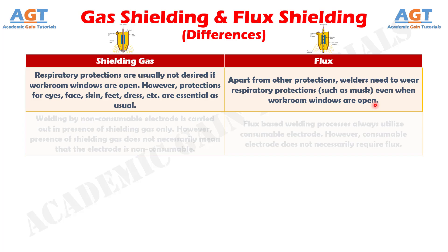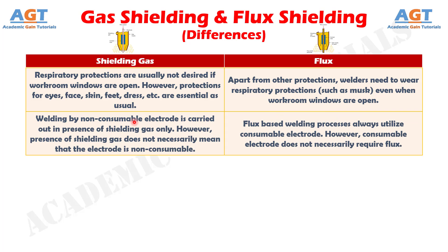Number 7: Welding by non-consumable electrode is carried out in the presence of shielding gas only. However, presence of shielding gas does not necessarily mean that the electrode is non-consumable. Whereas flux-based welding processes always utilize a consumable electrode. However, a consumable electrode does not necessarily require flux.